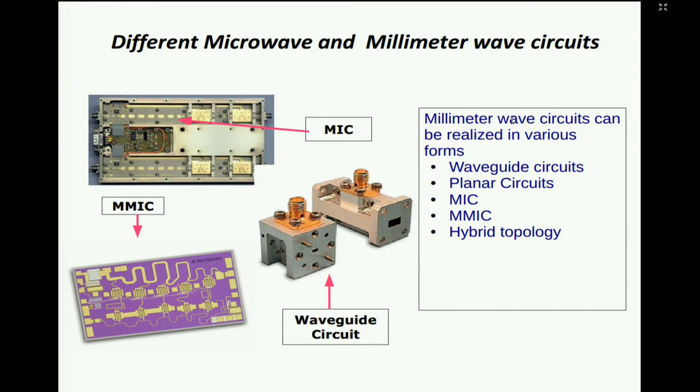The agenda covers: introduction, foundry and technology choices, design flow, DRC (design rule check), PCM (process control monitoring), tiling, understanding stack-up and component choices, and a case study if time permits. The different microwave and millimeter wave circuits include waveguide, microwave integrated circuits which are hybrid with discrete components like inductors and resistors, distributed components like filters, amplifiers, and MMIC where everything is put into one monolithic block.